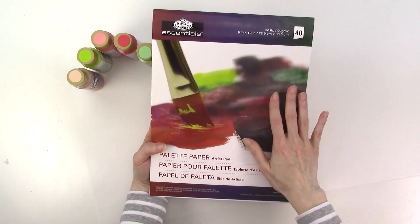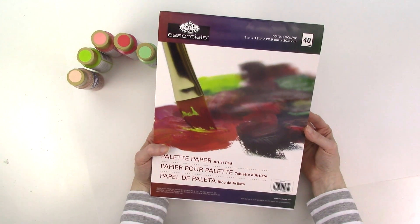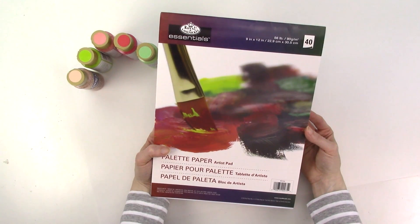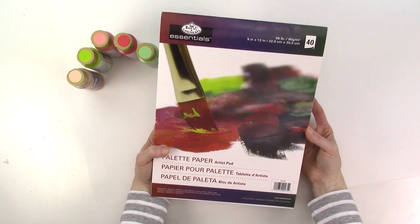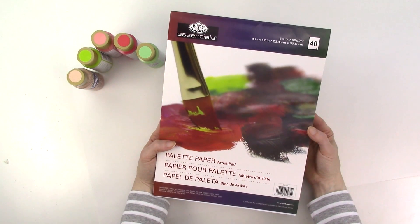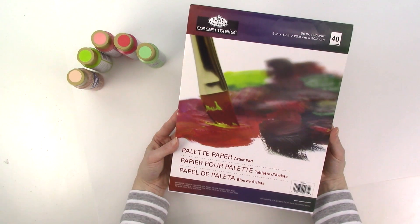I'll be using a sheet of palette paper to hold my paint. I like to use palette paper for projects that call for several different paint colors because it gives me a lot of room to work, and when I'm finished with the project and the paint dries completely, I can often peel the acrylic paint off of the sheet of palette paper and reuse it. If you don't have palette paper, a sheet of printer paper or even a paper plate will work well too.